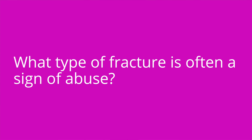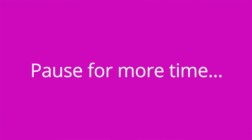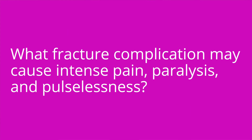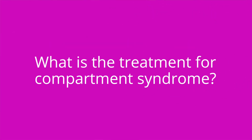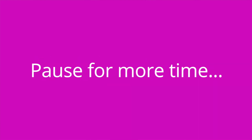It's quiz time — three questions for you. Question one: what type of fracture is often a sign of abuse? The answer is a spiral fracture. Question two: what fracture complication may cause intense pain, paralysis, and pulselessness? The answer is compartment syndrome. Question three: what is the treatment for compartment syndrome? The answer is a fasciotomy.